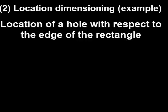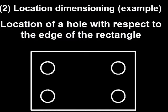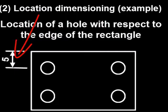The second one is location dimensioning. An example is the location of a hole with respect to the edge of the rectangle. So this rectangle has got four holes, and we want to locate these holes with respect to some dimension of this rectangle — specifically with respect to the edge of the rectangle.